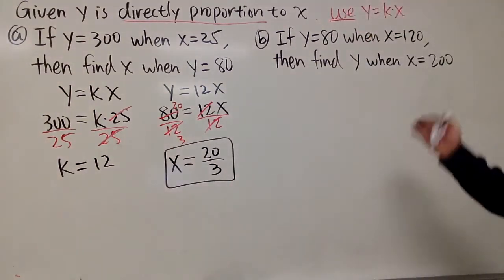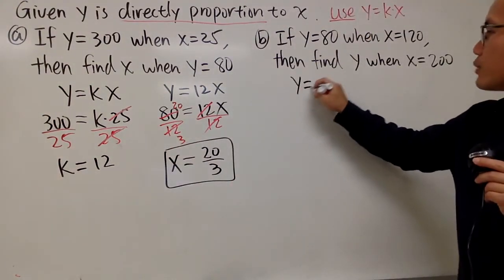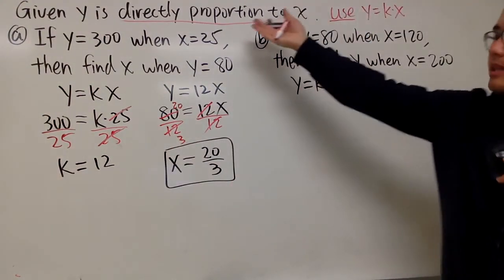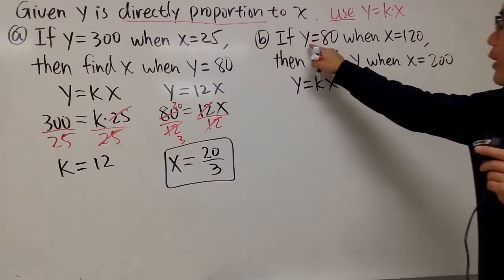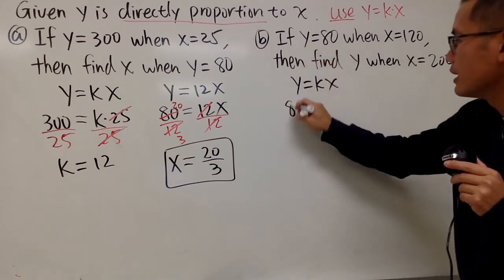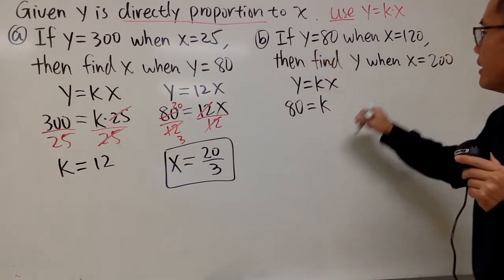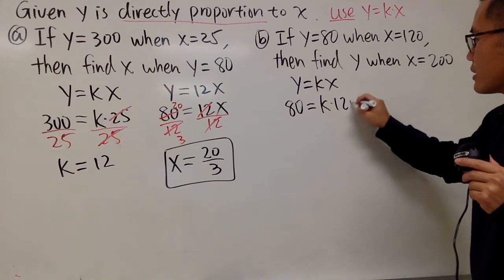And for the second part, same thing. Let's go ahead and do that. First, write down y equals k times x, because again, that's the connection between y and x. Right here it says when y is equal to 80, let's go ahead and put that down. That's equal to k. And the x is 120, so let's go ahead and put that down.